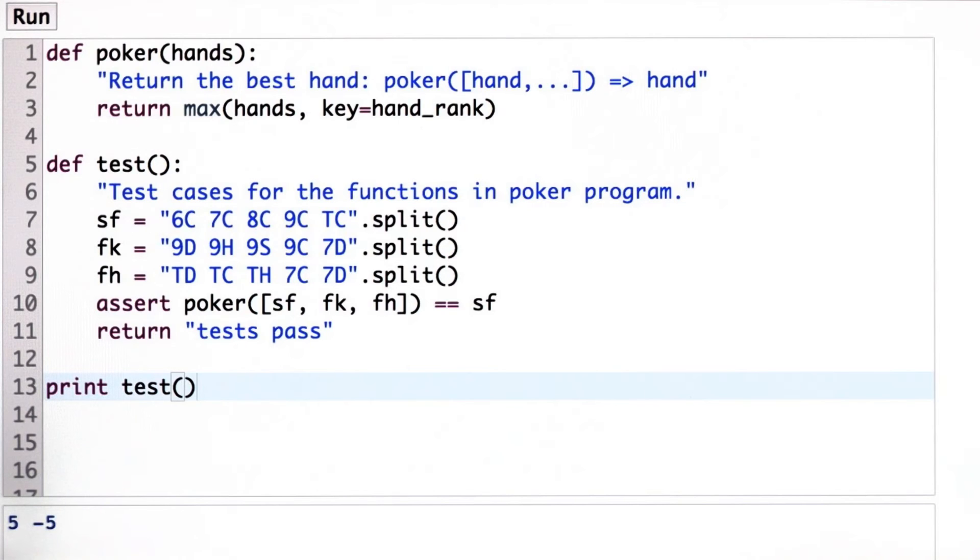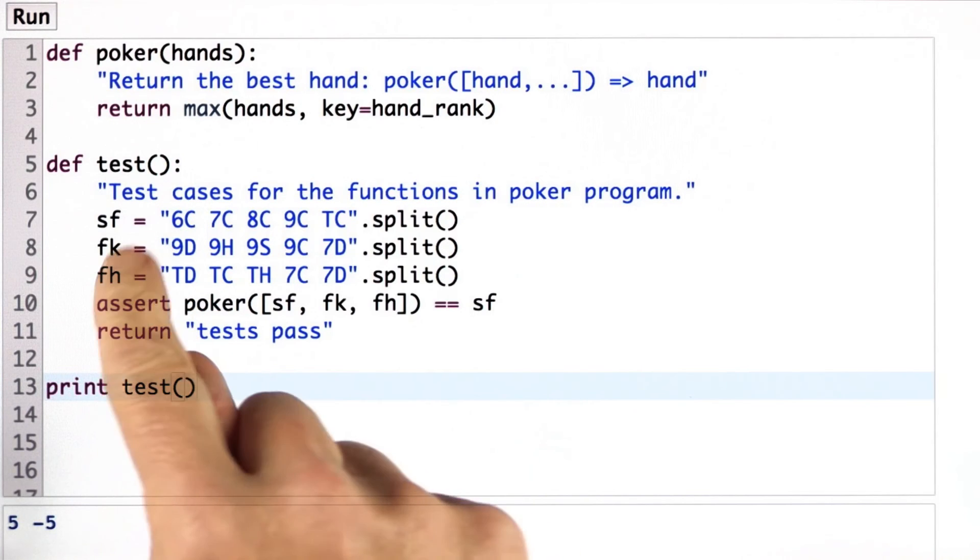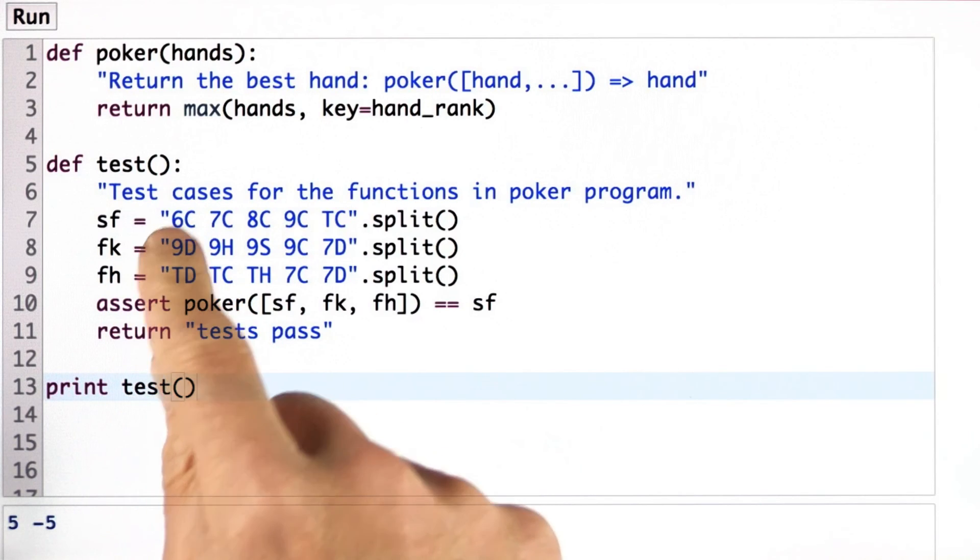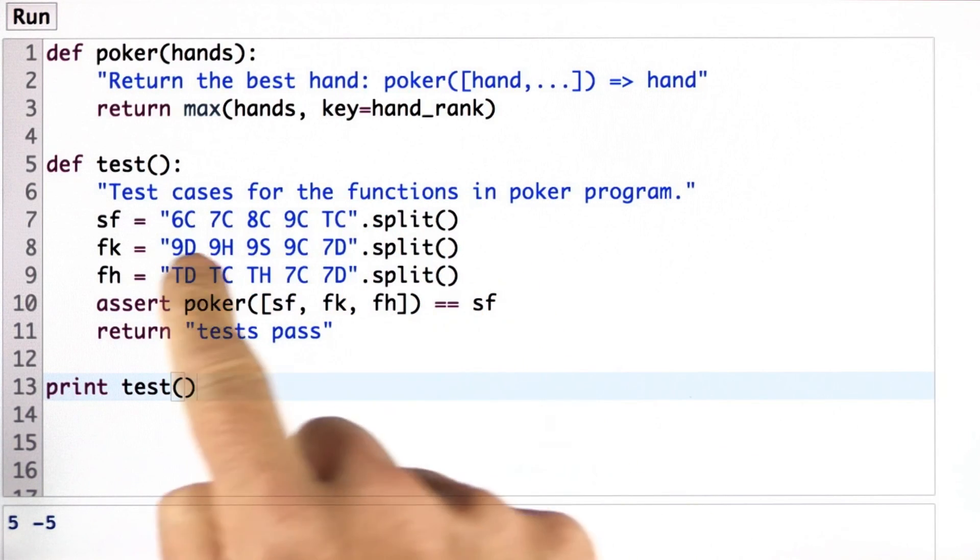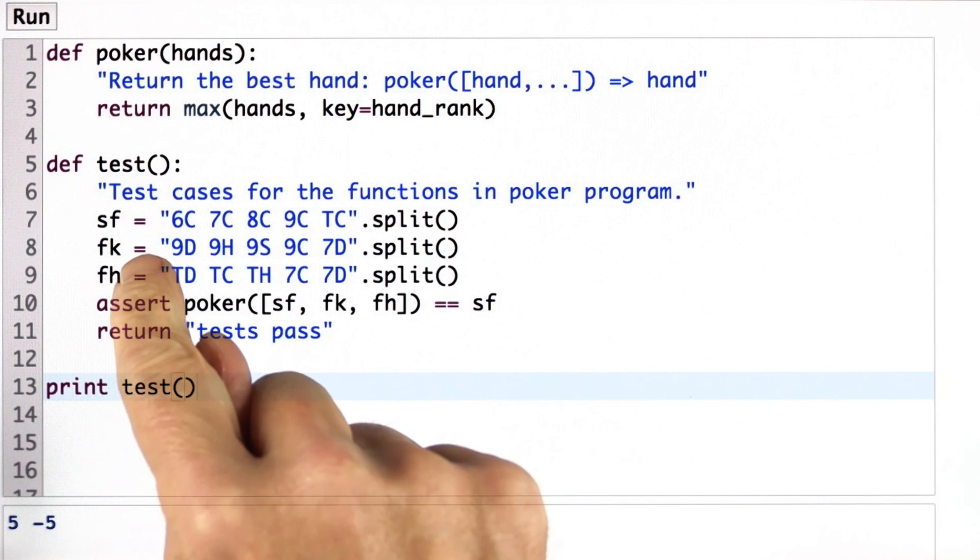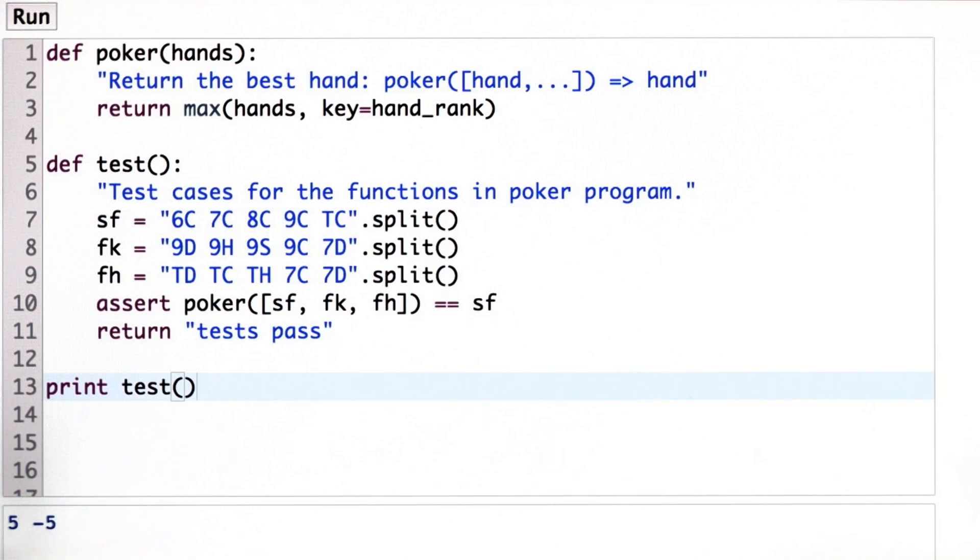Now I want you to add two more tests. One test will test whether the winner between four of a kind and full house is correct—which should be four of a kind. Another test that seems more trivial: testing if we have two copies of full house playing each other, that full house is indeed the winner.